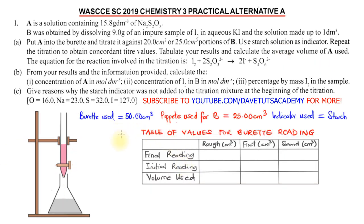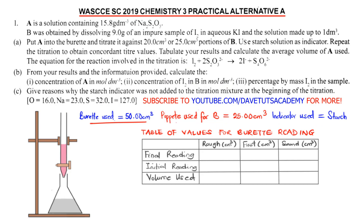As a rule of thumb, it is always ideal to show the parameters we are using: for the burette, we use a 50 cm³ burette. We need to state the indicator used, which is starch. We also indicate the dimension of the pipette used, which is 25 cm³ for B. This tells us the volume of B is 25 cm³, which we will use in solving our question.